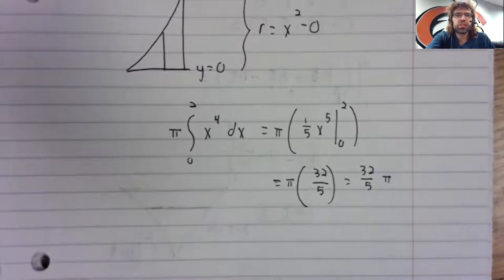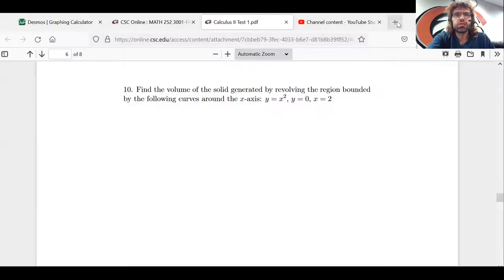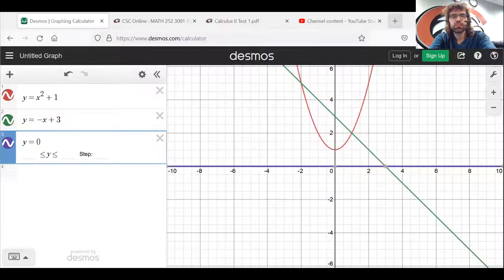The next volume question, that would be number 11. y equals x squared plus one and y equals negative x plus three. So you see, here's the region between these two curves.